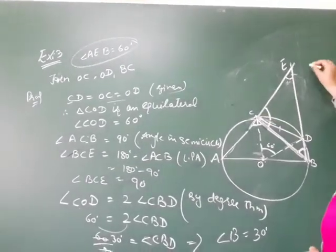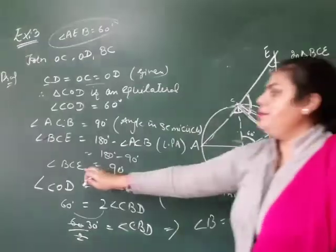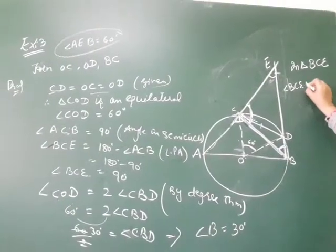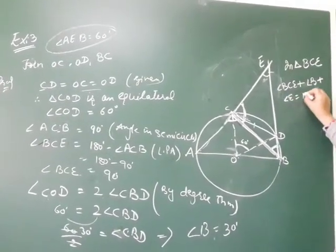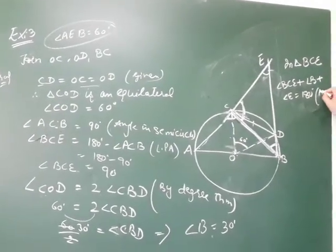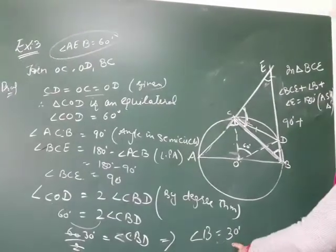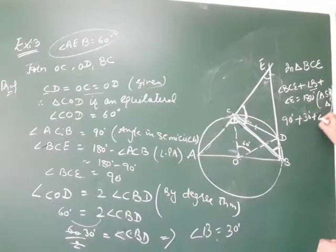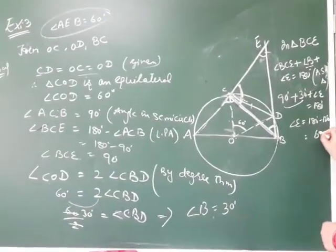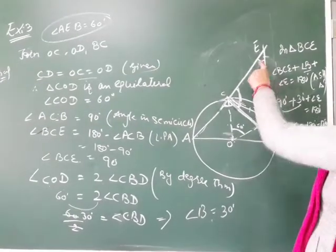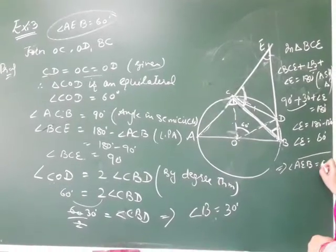Now in triangle BCE, angle BCE plus angle CBE plus angle E equals 180 degrees by the angle sum property of a triangle. So 90 plus 30 plus angle E equals 180. Angle E equals 180 minus 120, which is 60 degrees. So angle AEB is 60 degrees.